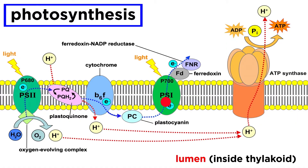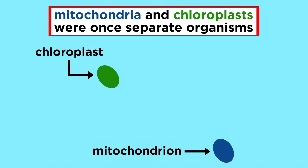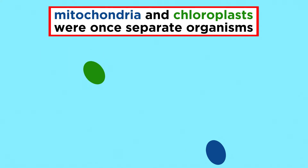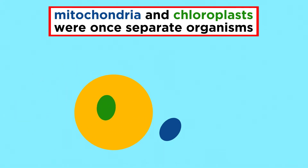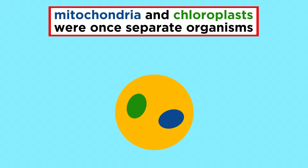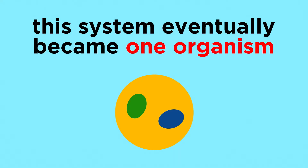We talked about photosynthesis in the biochemistry course, but let's take another look at the chloroplast now. This organelle, like the mitochondrion, is proposed to have once been a separate organism by endosymbiotic theory. At some point, an ancestor of the chloroplast was ingested by a larger host cell, but not digested — rather, a mutually beneficial or symbiotic relationship was established.